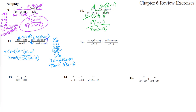What can we cancel? The x minus 5s cancel. The m squared and m cubed: m squared takes out 2 and leaves 1m. The 5 cancels with 10 and leaves a 2. The 2 cancels with 6 and leaves a 3. So we have negative 3m times x plus 5 over x times 3x minus 4. That's number 11.